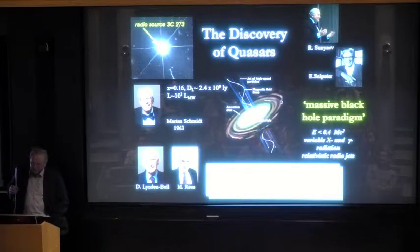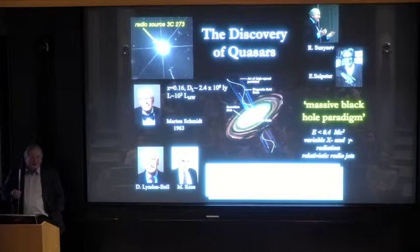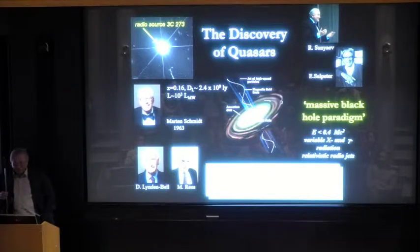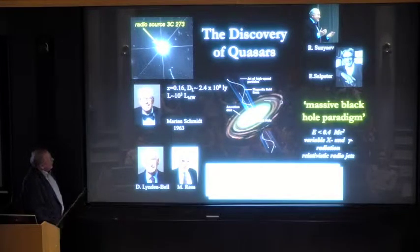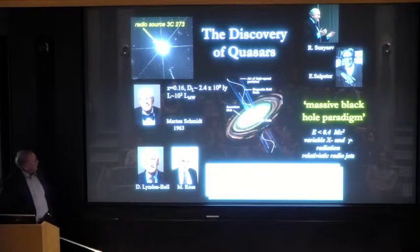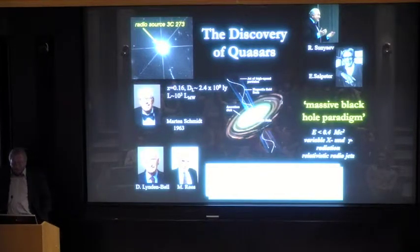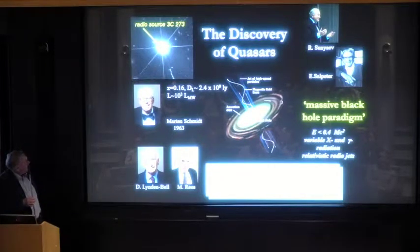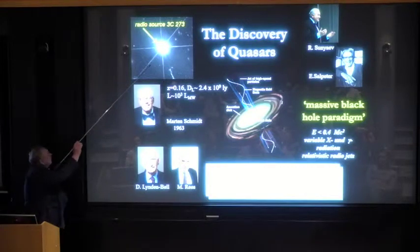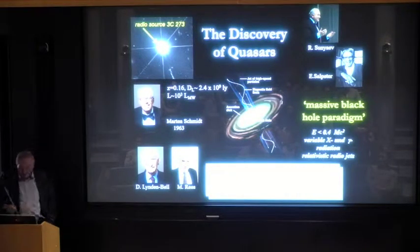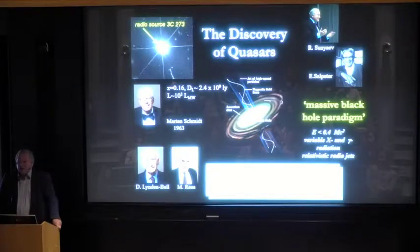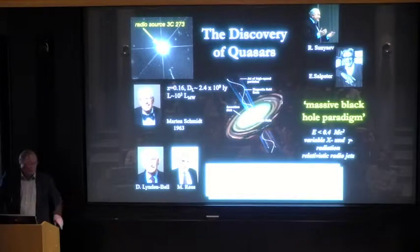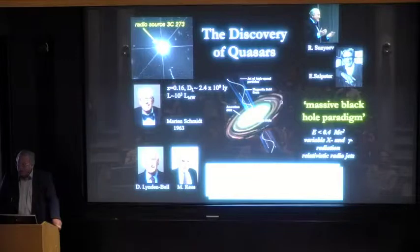Certainly, it was clear when the quasars were discovered that such an amount of energy, as seen in the first object 3C273 at redshift 0.15, that if the distance really was 2.5 giga light-years, the amount of energy radiated over 1,000 times the Milky Way within a very small fraction of the area of the Milky Way.